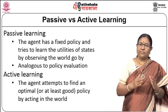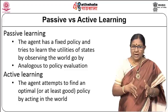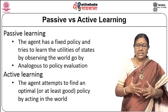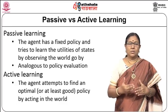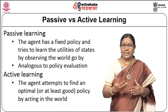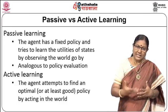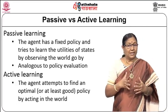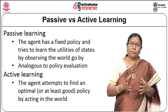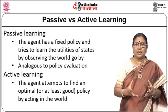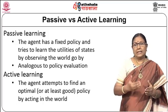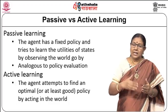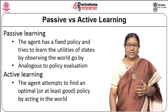In passive learning, this is done through a fixed policy where the agent tries to learn the utilities of states by observing the world. This is basically policy evaluation — the policy is fixed and we are trying to find out how good the policy is. In active learning, on the other hand, the agent attempts to find an optimal or at least good policy by acting in the world. Here the policy is not fixed; the agent tries to find the best policy.